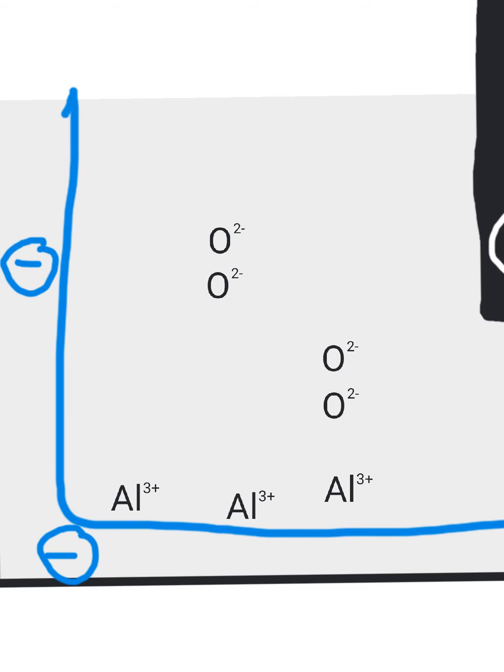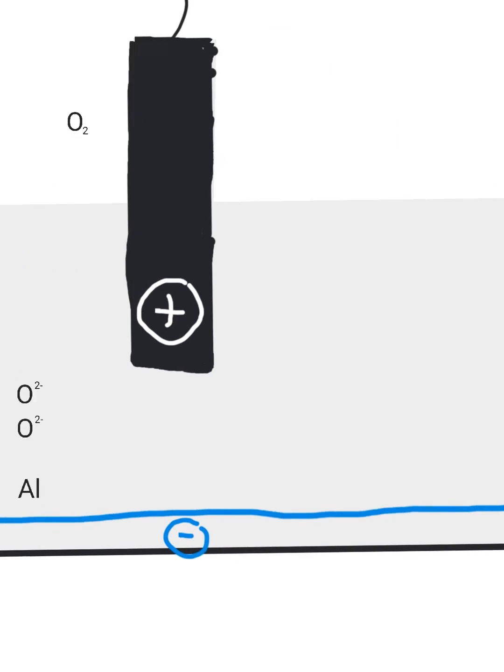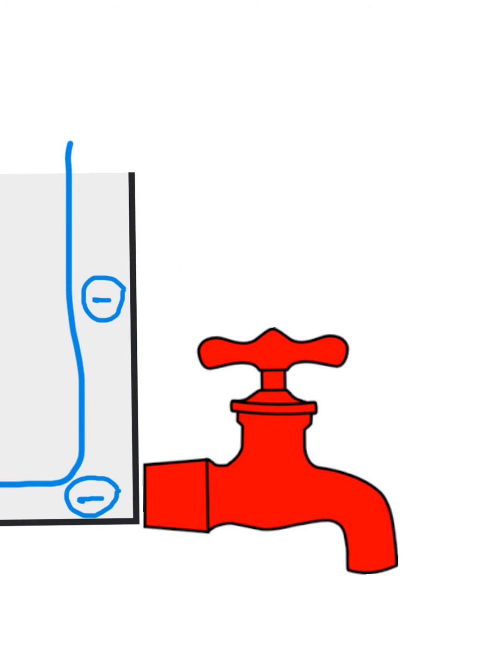They're each going to pick up 3 electrons from this negative electrode. That means they're now going to lose that 3 plus charge. I'm just going to get rid of that. You've now got neutral aluminium atoms. They're still going to be in the molten state which means you can just simply open a tap and pour this into a container.